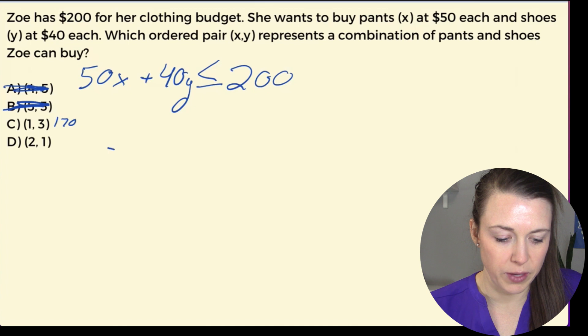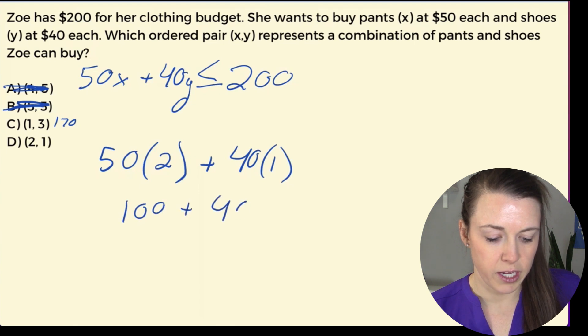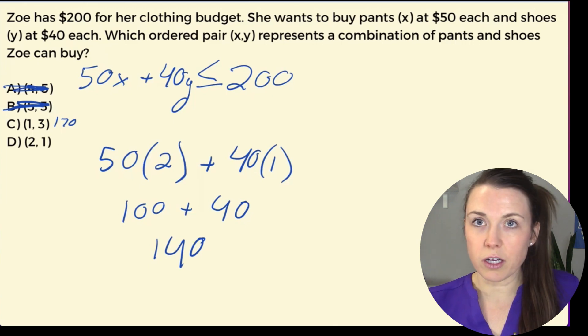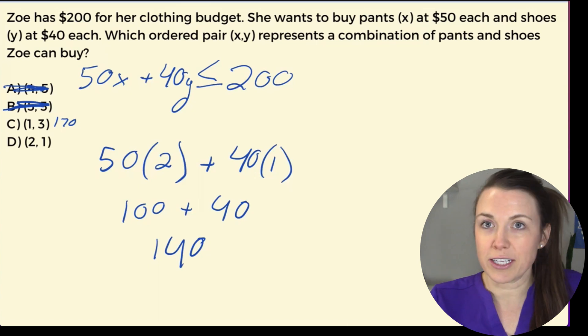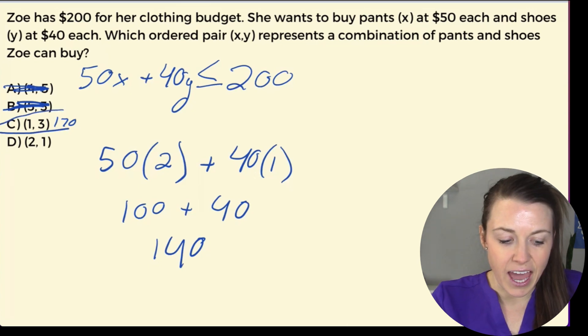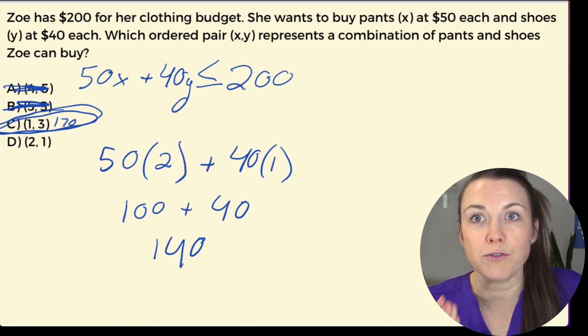And let's take a look at D and see which one it is. For D, we have 50 times 2 plus 40 times 1. So 50 times 2 is 100 plus 40, and she's at 140. So does that work? Yes. She's staying within budget. But with these types of questions, we're trying to get as close to that 200 as we can. So what is our answer? My friend, C at 170. So she can buy one pair of pants and three pairs of shoes.